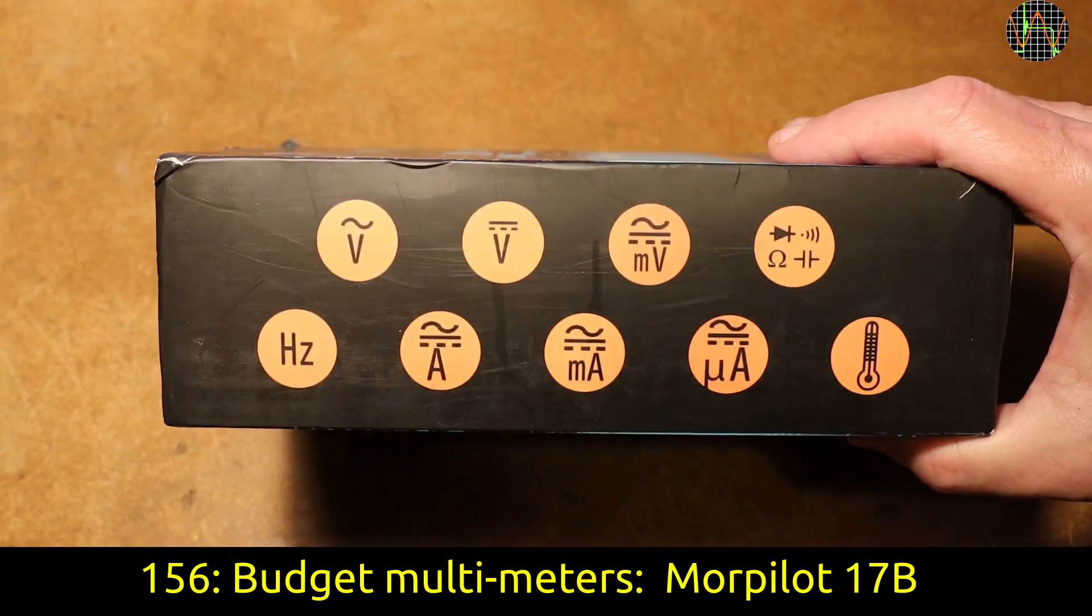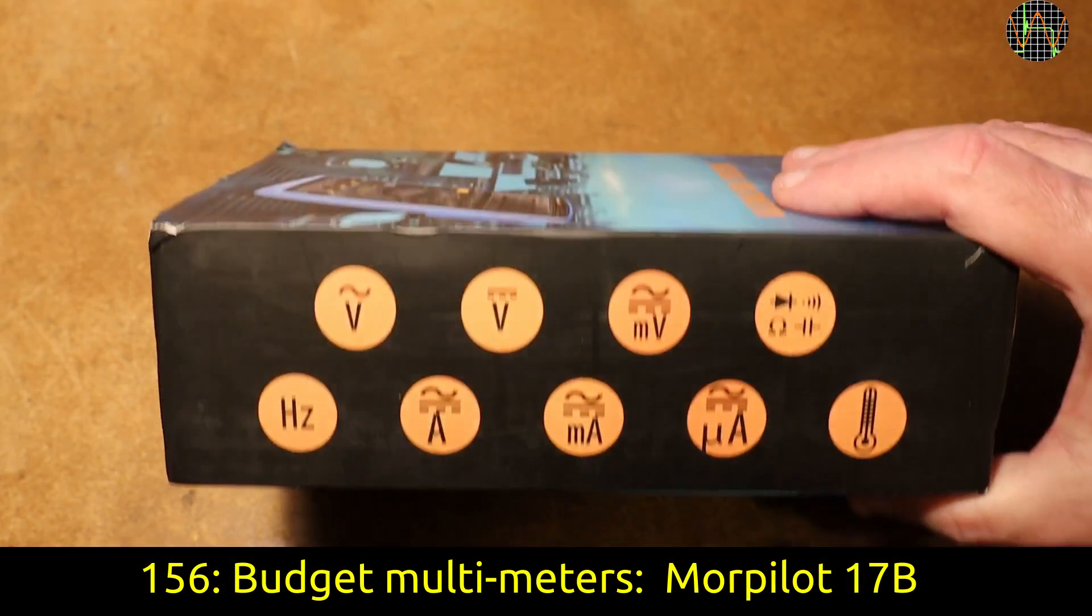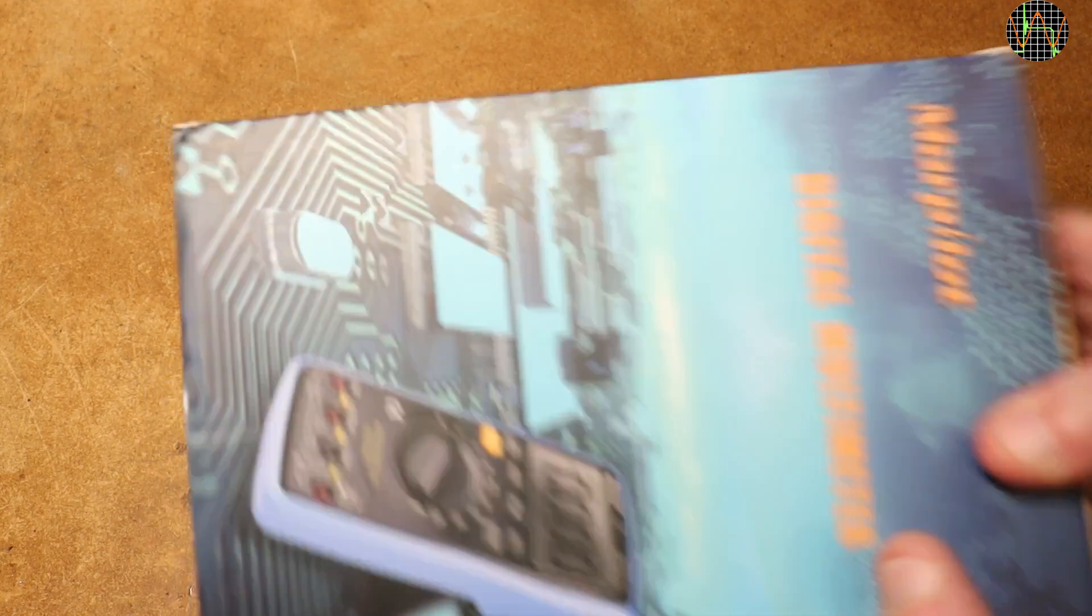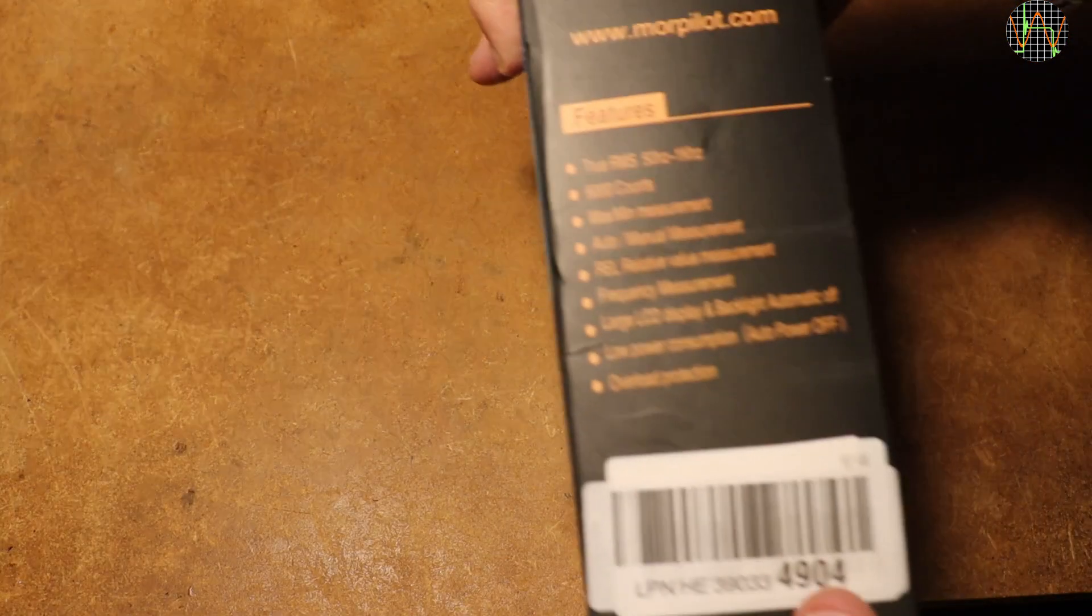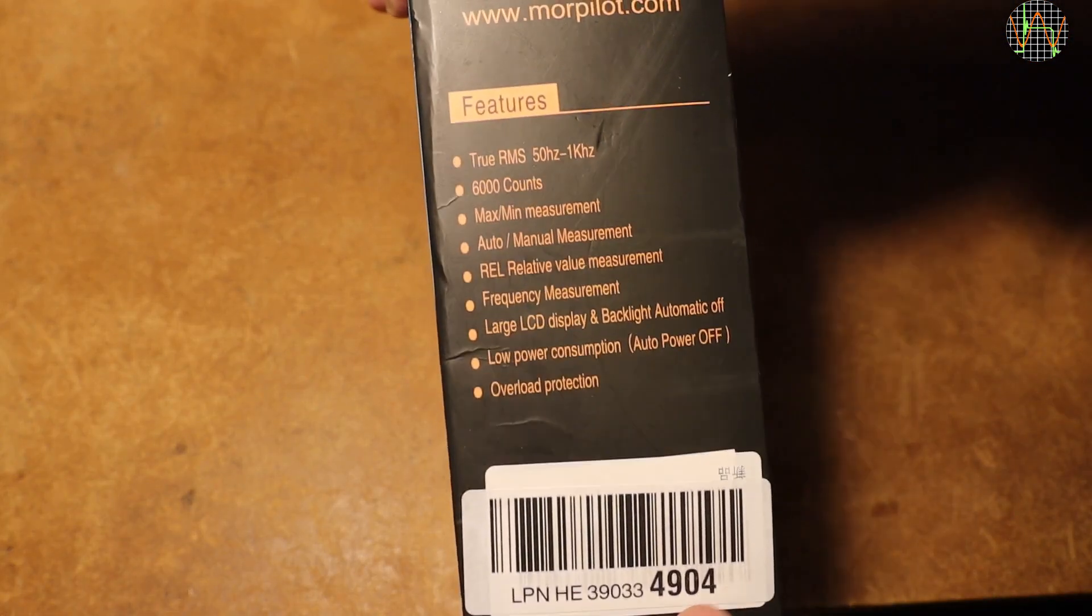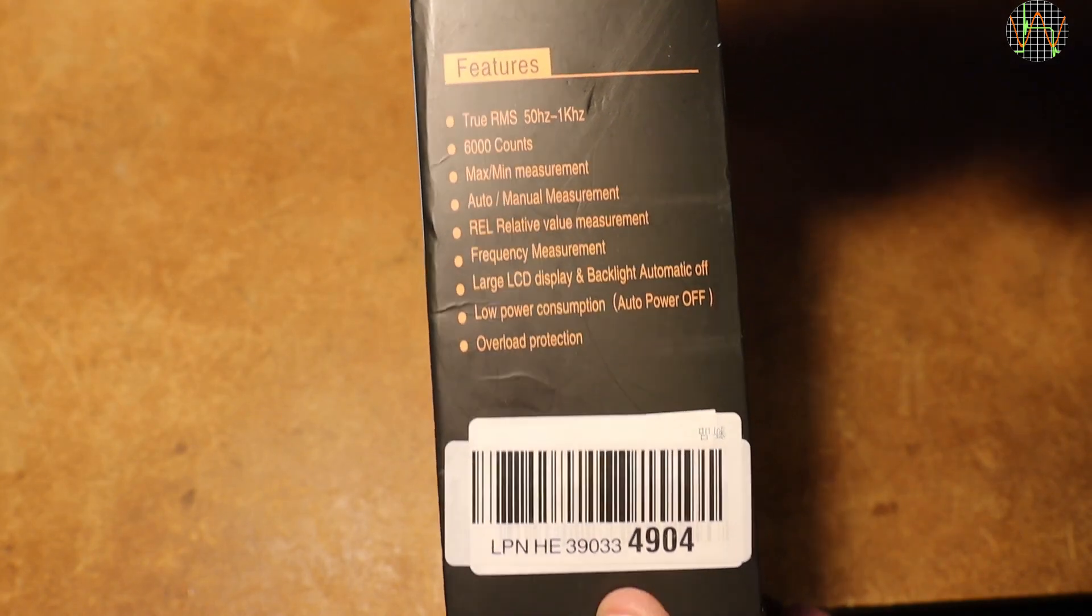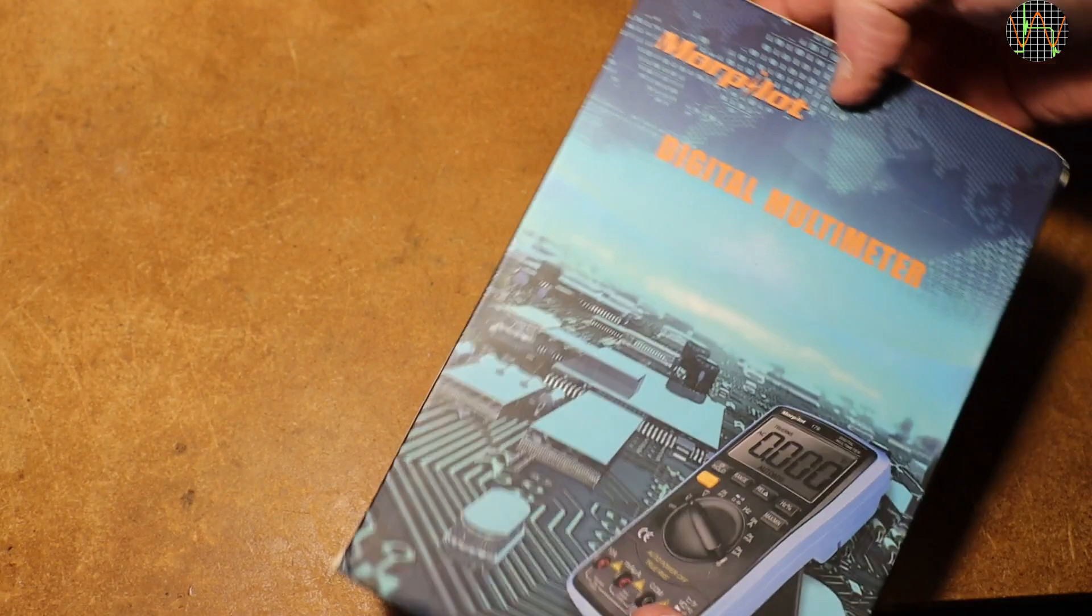Hi there, this is the next installment of my series on budget multimeters with more than 2000 count displays, 2V and currents that are reasonably safe and not smart, because for sensitive electronics, smart still has some issues.